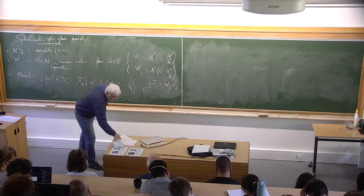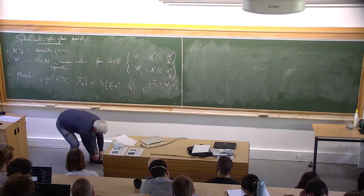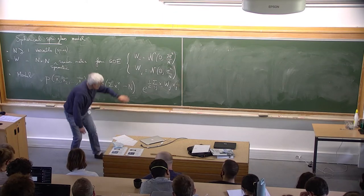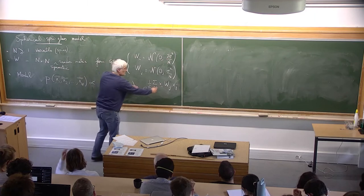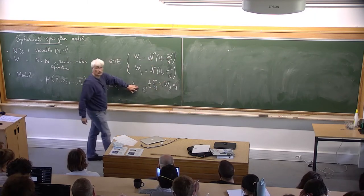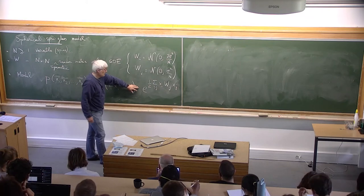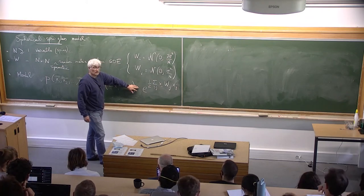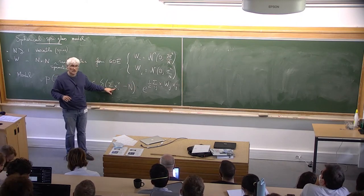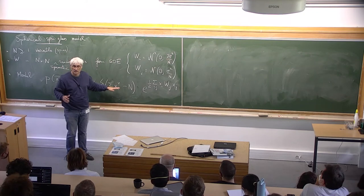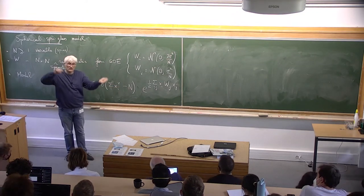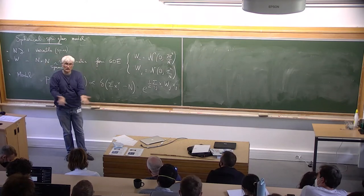This is a relaxation of the Sherrington-Kirkpatrick model. In the Sherrington-Kirkpatrick model, we have x_i equal to plus or minus one. The w_ij are drawn from the same distribution. If all x_i are plus or minus one, the sum of x_i squared is n, so the original binary spin configurations lie on the hypersphere of the same radius.